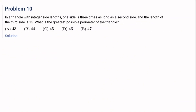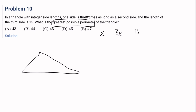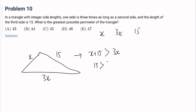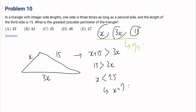Number 10: in a triangle with integer side lengths, one side is 3 times as long as the second side, and the third side is 15. What is the greatest possible perimeter? Let the sides be x, 3x, and 15. To maximize, we want x as large as possible. By the triangle inequality, x plus 15 must be greater than 3x, giving x less than 7.5, so x equals 7. The greatest perimeter is 7 plus 21 plus 15 equals 43. It's 8 (answer choice).